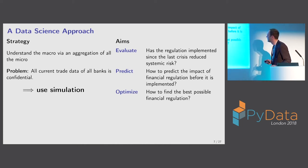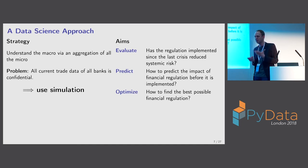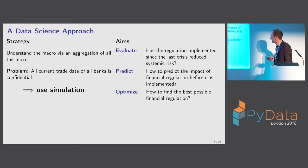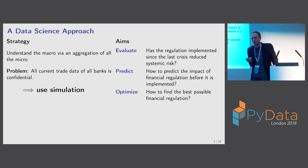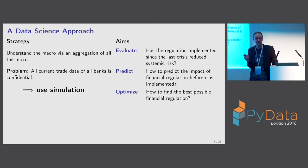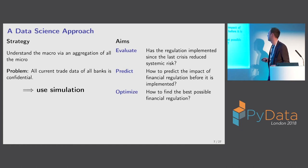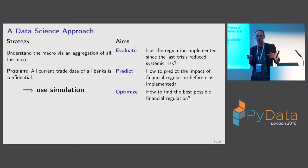The concrete questions we want to study: first, look at regulations already implemented since the crisis and understand if they had the desired effect of reducing systemic risk. Second, how can we predict the impact of financial regulation before implementing it? That would be really useful — we'd want to know the effect of a regulation before trying it out. And if one could combine the two, one could even ask: how can we find the best possible financial regulation?